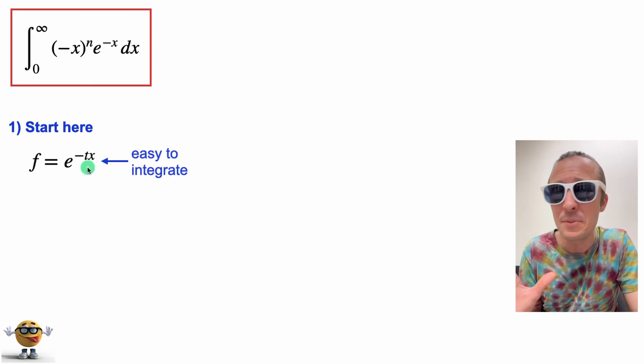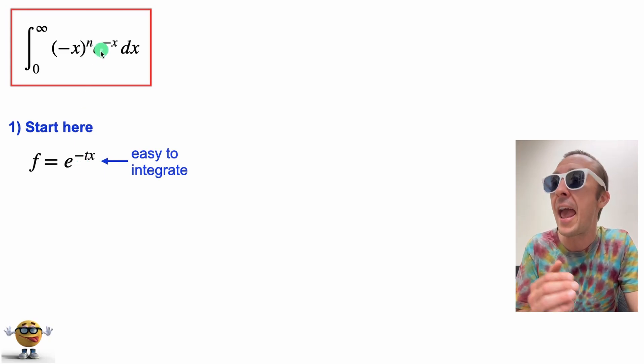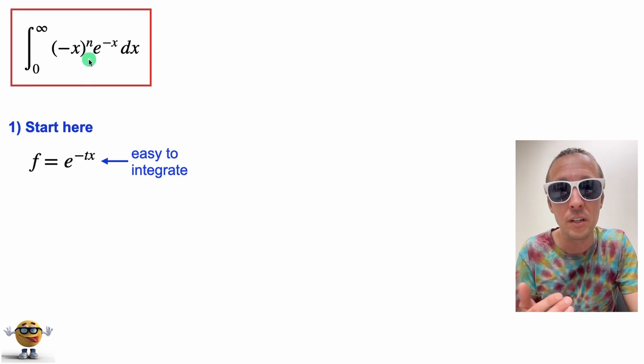Now at the same time, I've introduced this parameter t, and this is key in this trick. We've got to introduce some parameter, so t can be any real number. I should mention, n can be any real number as well.